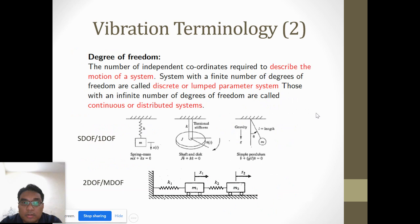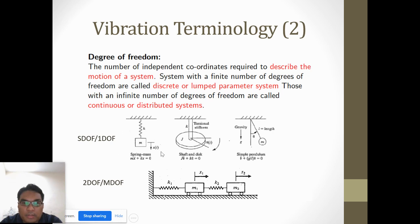The degree of freedom is the number of independent coordinates required to describe the motion of a system. Systems with a finite number of degrees of freedom are called discrete or lumped parameter systems, while those with infinite degrees of freedom are called continuous systems. A system with one direction of movement only is a single degree of freedom. When we have two masses with two different movements, it is called two degree of freedom or multi-degree of freedom.